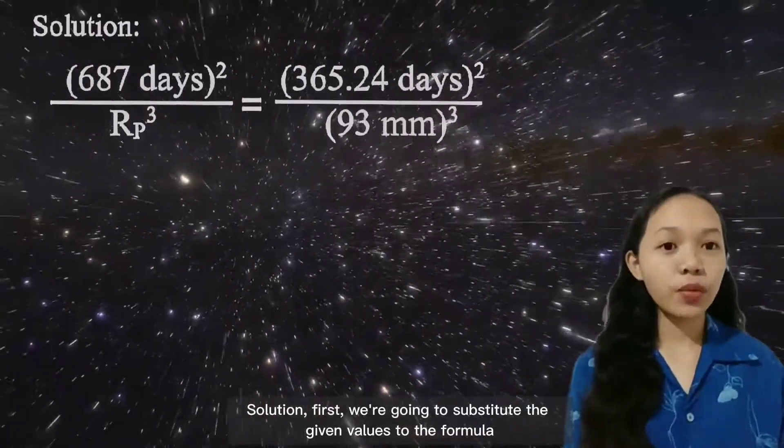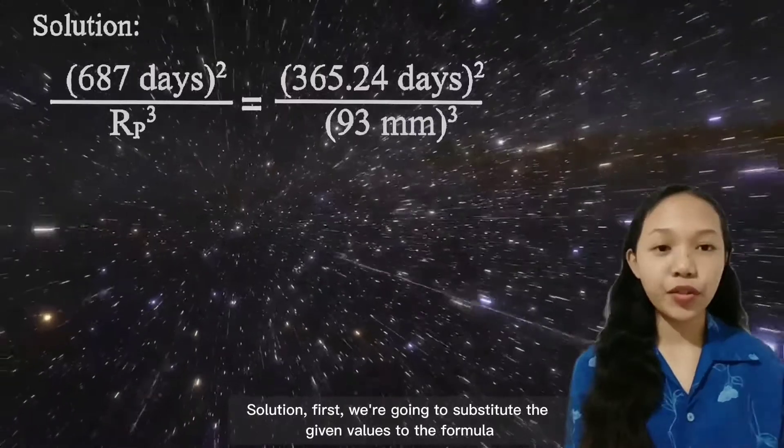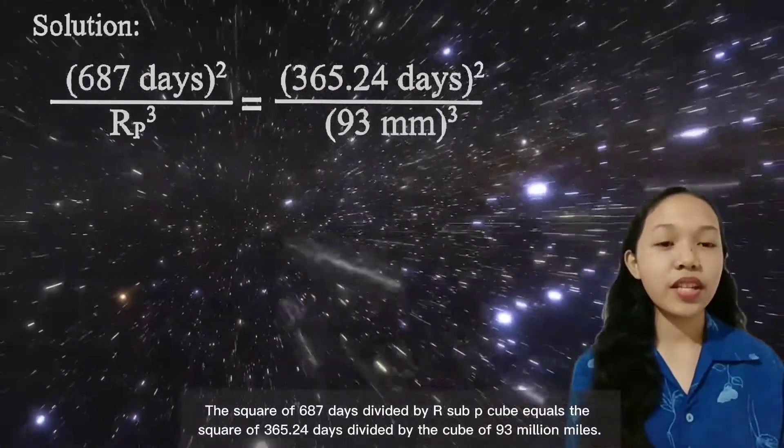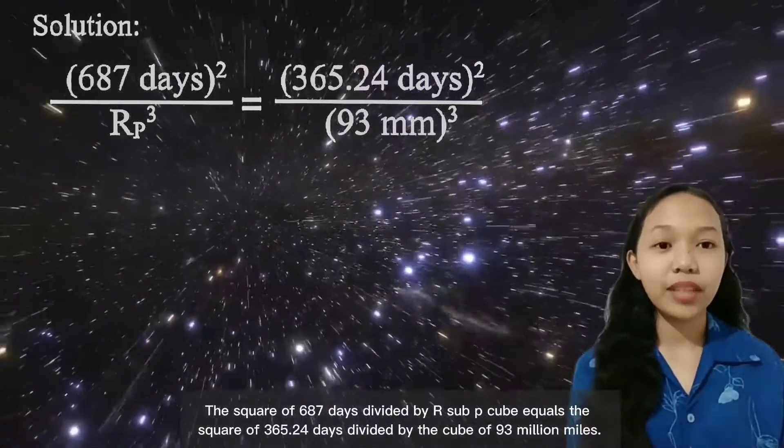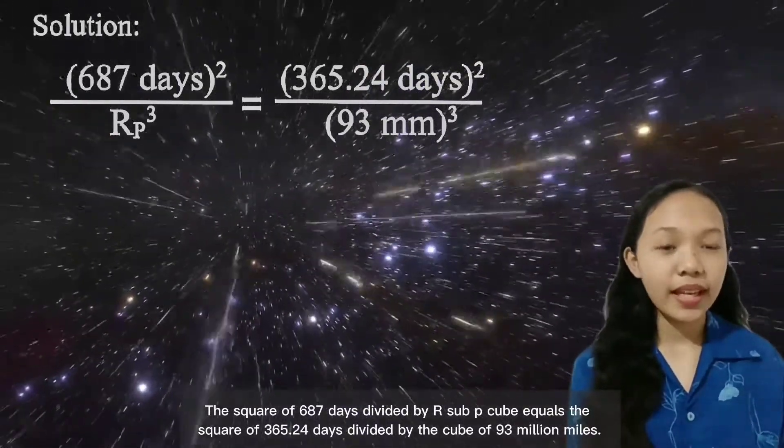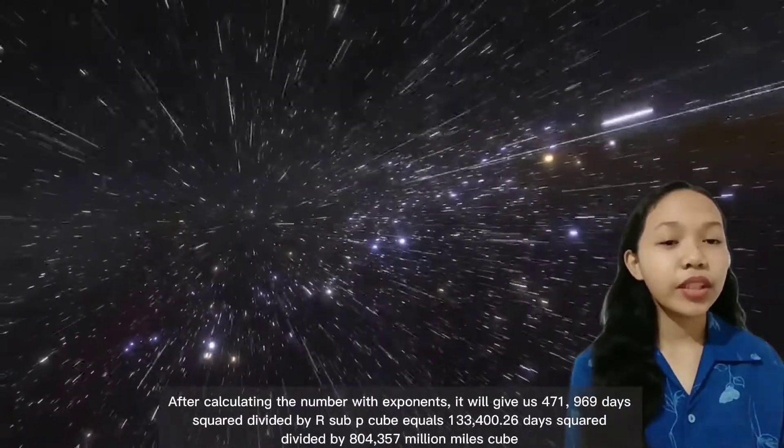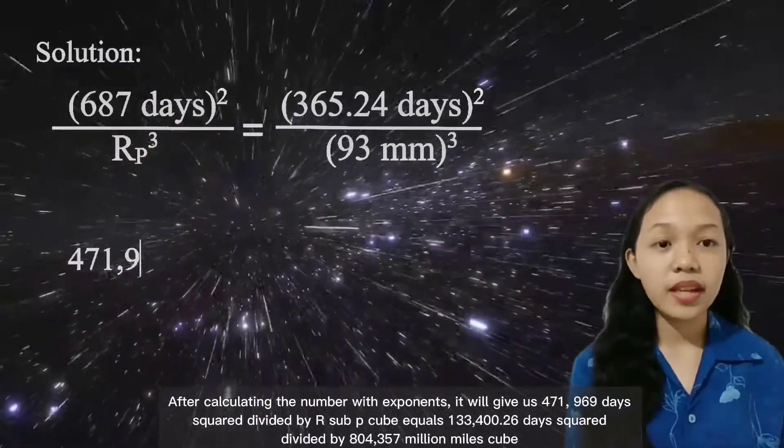Solution. First, we're going to substitute the given values to the formula. The squared of 687 days divided by R sub P cubed equals the squared of 365.24 days divided by the cube of 93 million miles. After calculating the numbers with exponents...